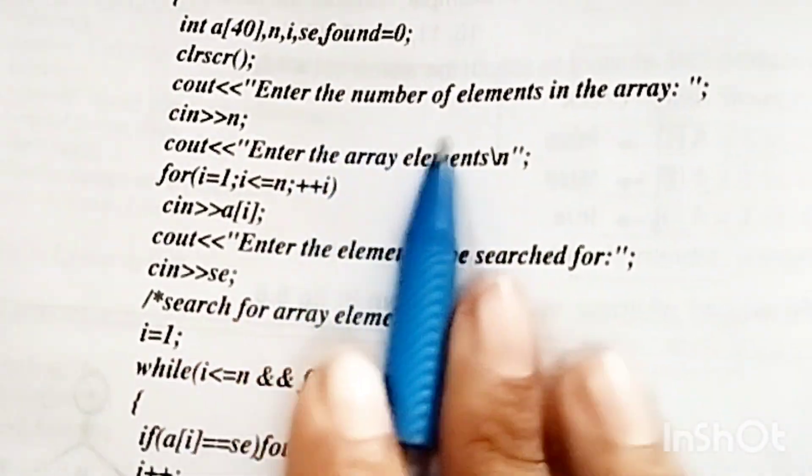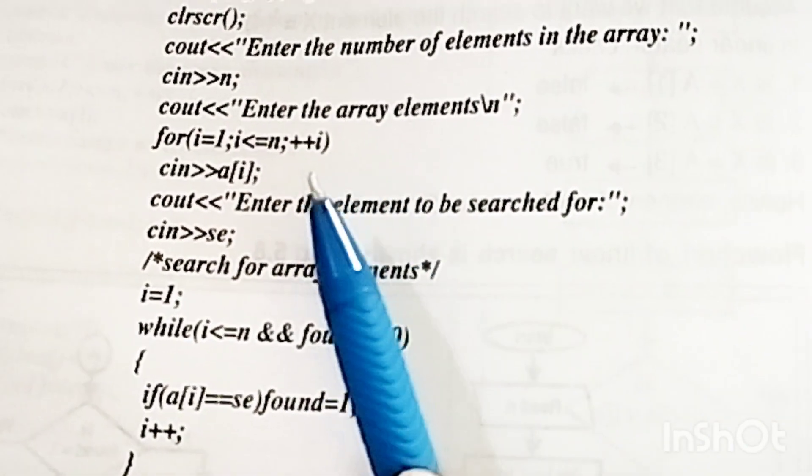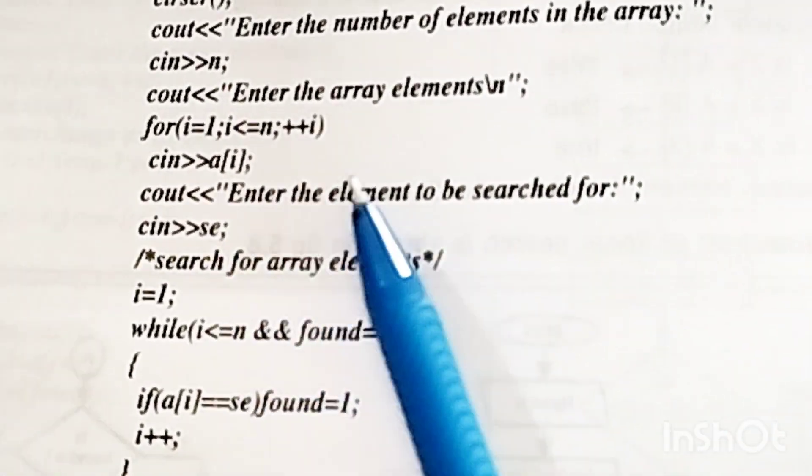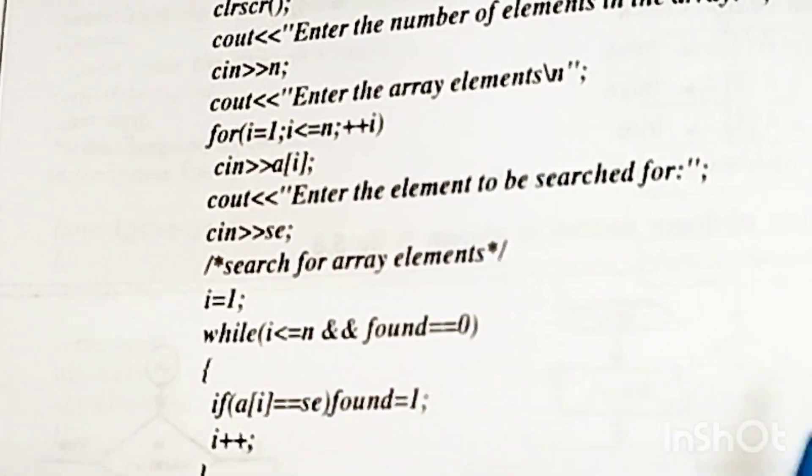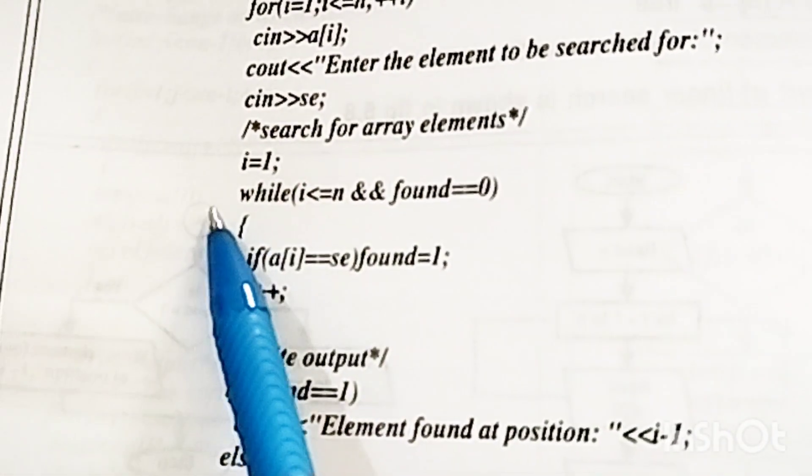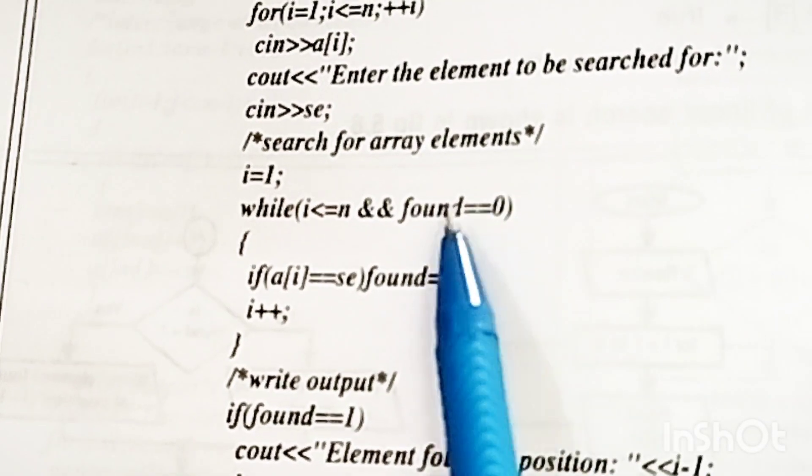Let's look at the logic of sequential search. First, we enter the elements. Then we ask the user which element to search. We have added a loop. First we take a flag variable named 'found'. The flag indicates whether our element has been found or not. Initially, we set found to 0.